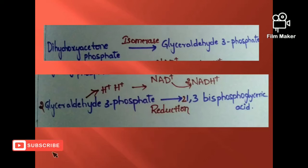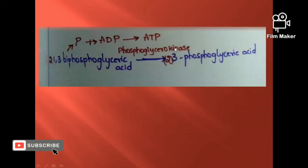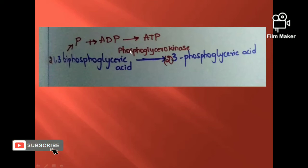In the seventh step, 2 molecules of 1,3-bisphosphoglyceric acid give rise to 2 molecules of 3-phosphoglyceric acid in the presence of enzyme phosphoglycerokinase.